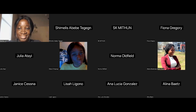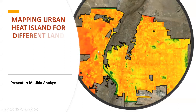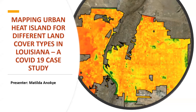I'm going to share my screen now. Hello everyone. My name is Matilda Anoki, and this afternoon — or evening or morning, wherever you find yourself — I am presenting on Mapping Urban Heat Island for different land cover types in Louisiana, which is a COVID-19 case study.